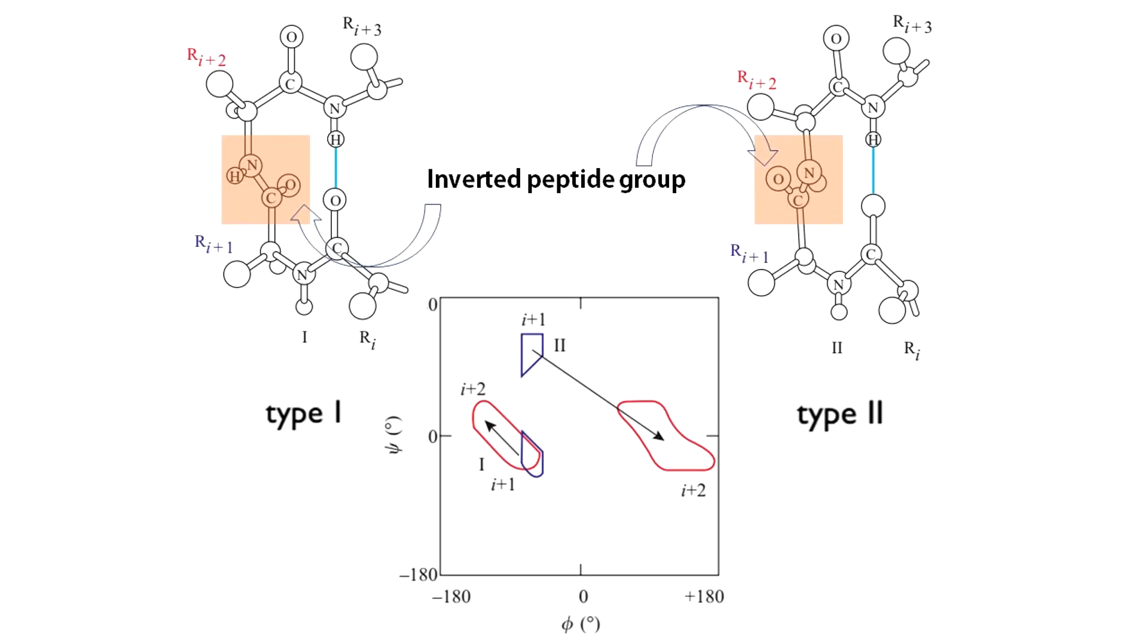There are two basic types of turns, type I and type II. The hydrogen bonding pattern remains identical in both. The difference between the two types of turn is an inverted peptide bond. So you can easily understand that phi and psi angles associated with these two types of turn would be entirely different. The difference you can see here in this Ramachandran plot.